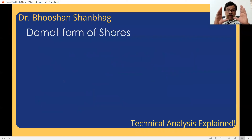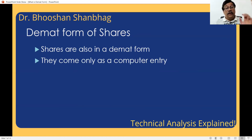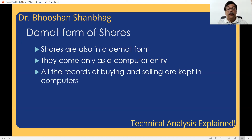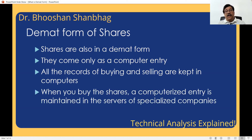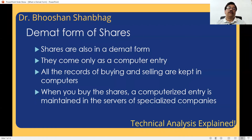So now let us come back to our shares. What is the demat form of shares? Shares are also in demat form — they come as a computer entry. You can take a printout and it will come as a paper entry, but it is still in demat form. Records of buying and selling are kept on the computer. When you buy a share, a computerized entry is maintained in the servers of specialized companies who keep track of every share transaction — from whose account it goes and into whose account it is put. But there is no share certificate going from one account to another, just an entry, because it is in completely demat form.